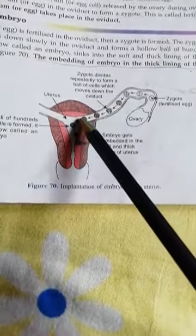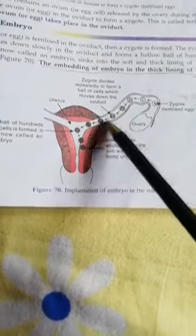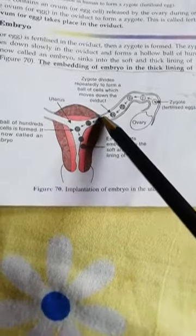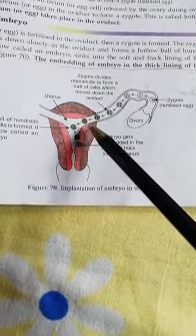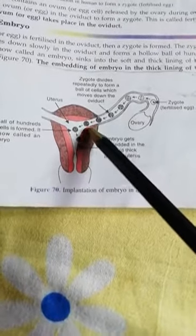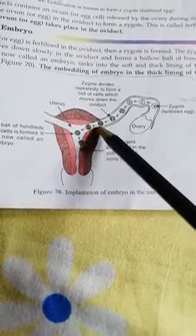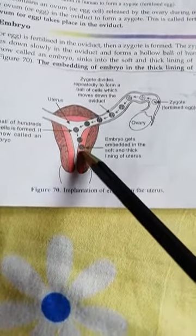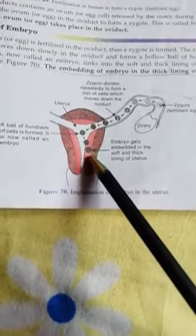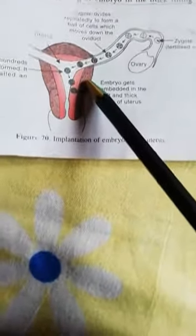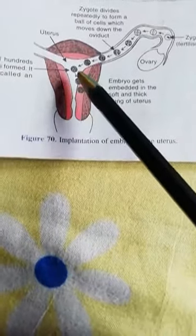This hollow ball of cells is nothing but the embryo. In this embryo we cannot see the special organs or any organ of the child — it is an undifferentiated structure. It sinks into the soft and thick lining of the uterus, visible as the red-colored patch in the diagram, and becomes embedded there. This embedding of the embryo in the thick lining of the uterus is called implantation.